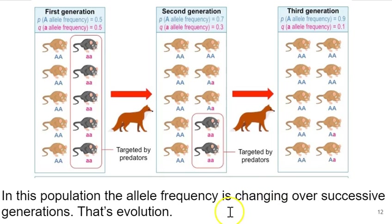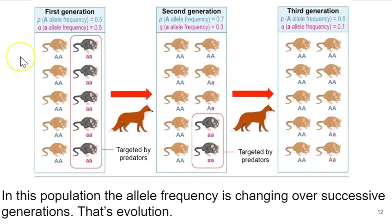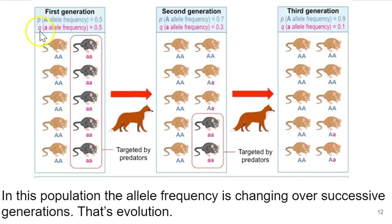One more thing to note: the letters P and Q. By convention in population genetics, little p is used to describe the frequency of the dominant allele, and little q is used to describe the frequency of the recessive allele — here, big A and little a respectively. That convention is going to be important when we get to the Hardy-Weinberg equation.